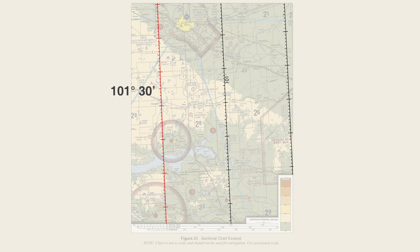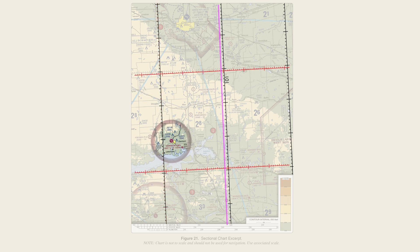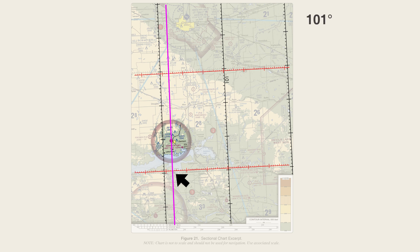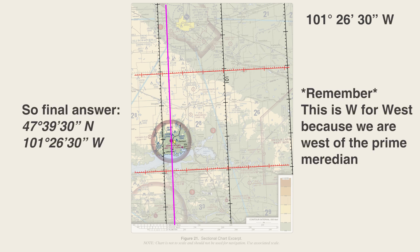Using the exact same technique, we count the number of hash marks going over until it lines up with Garrison Airport. Counting the hash marks, the line comes to about 25 or 26 — roughly 26 and a half. These hash marks represent minutes, so instead of saying 25.5, we count this as 101 degrees, 26 minutes, and about 30 seconds. So our longitude is 101 degrees, 26 minutes, and 30 seconds west.